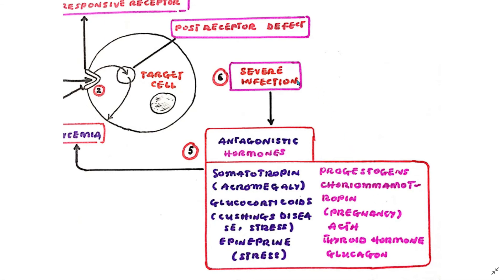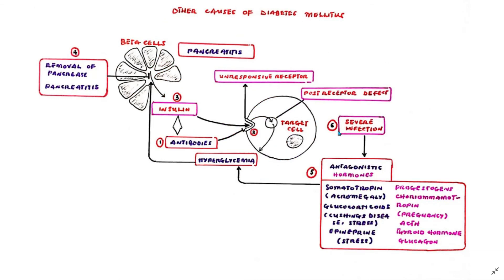Severe infections increase the release of several of these hormones, thereby giving way for the manifestation of diabetes mellitus.